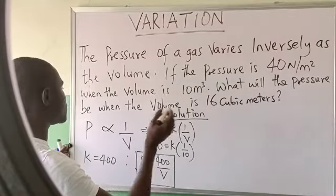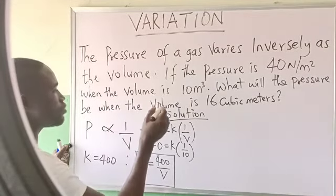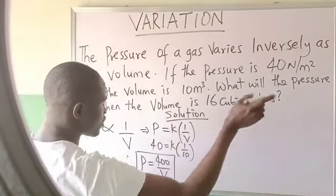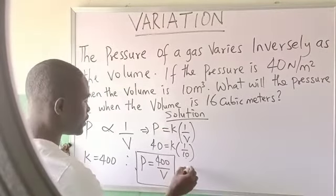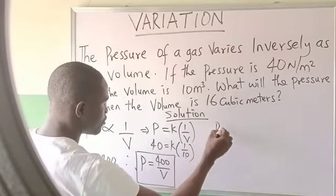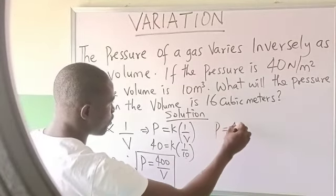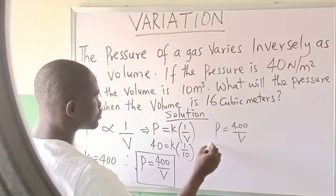So I say, what will the pressure P be when the volume is 16 cubic meters? Cubic meters means meter cube. So they say what will the pressure be. It implies that pressure, from this you go to 400 over V. Pressure will be possible.